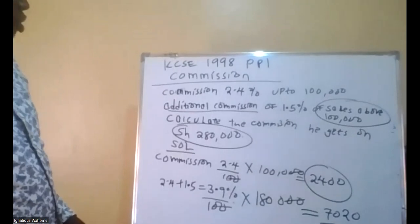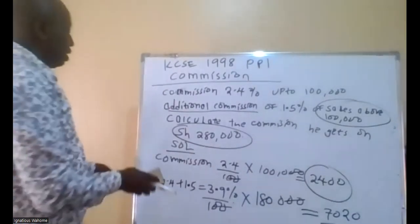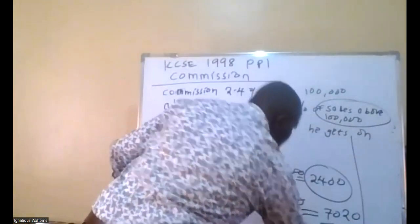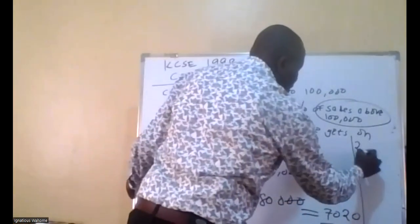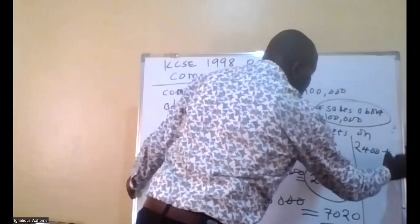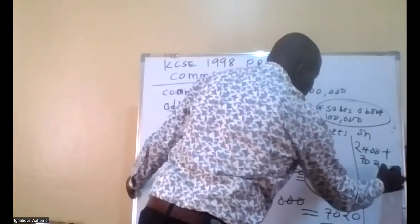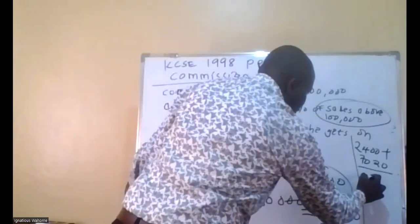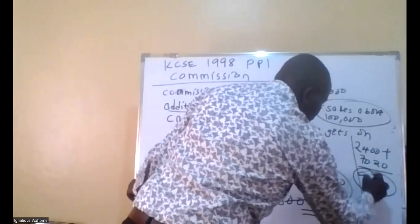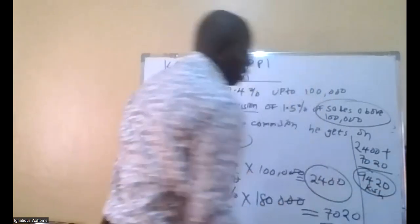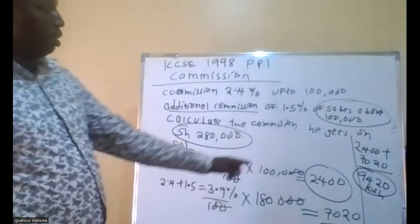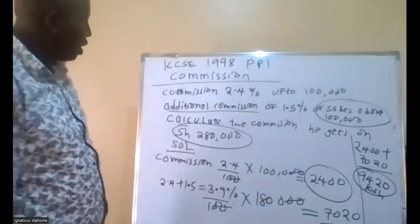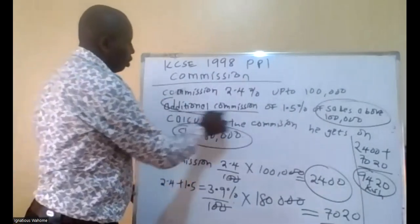So total earnings in this case: total earnings will be 2,400 plus 7,020, which comes to 9,420 Kenyan shillings. The key concept was the additional commission.